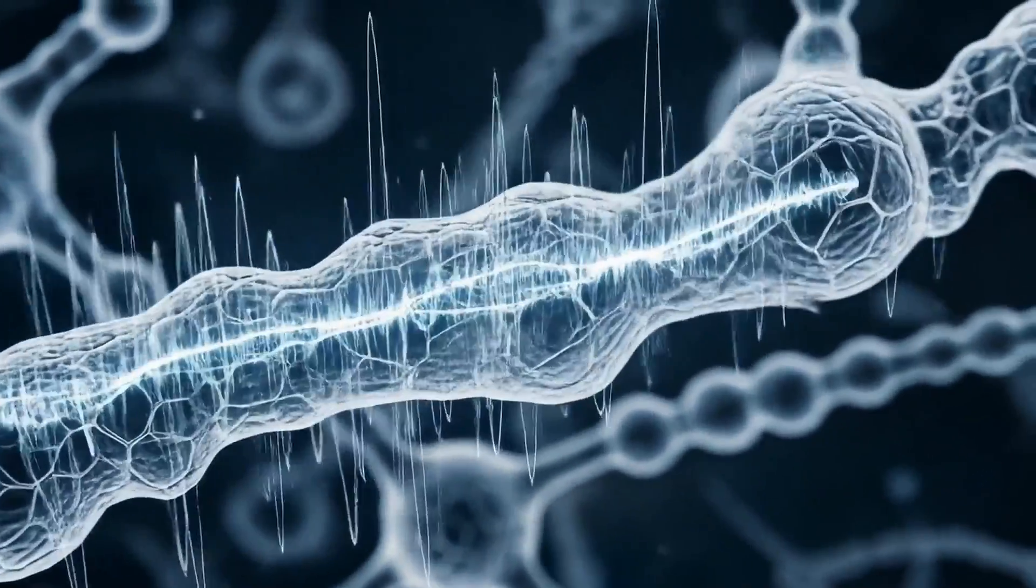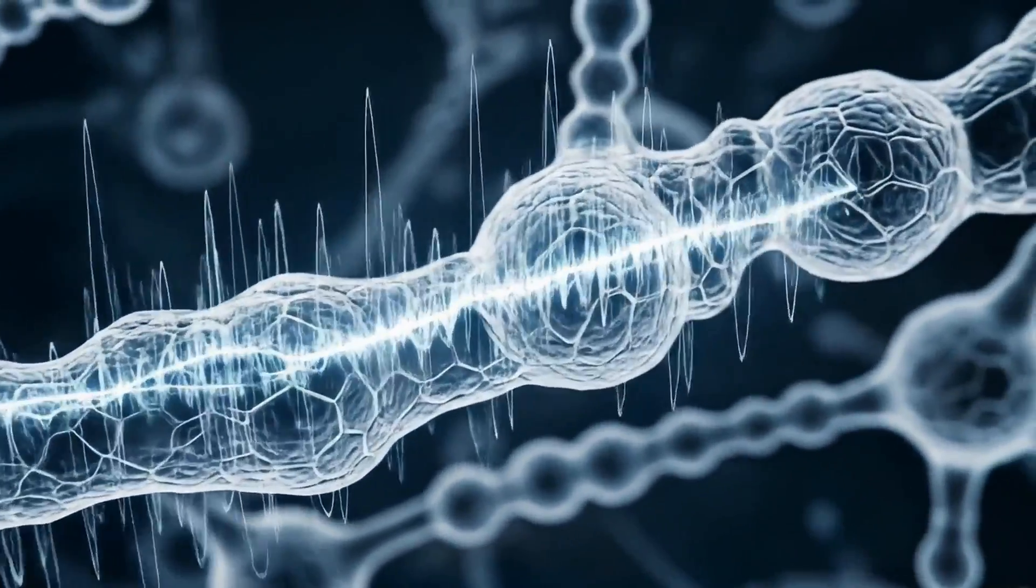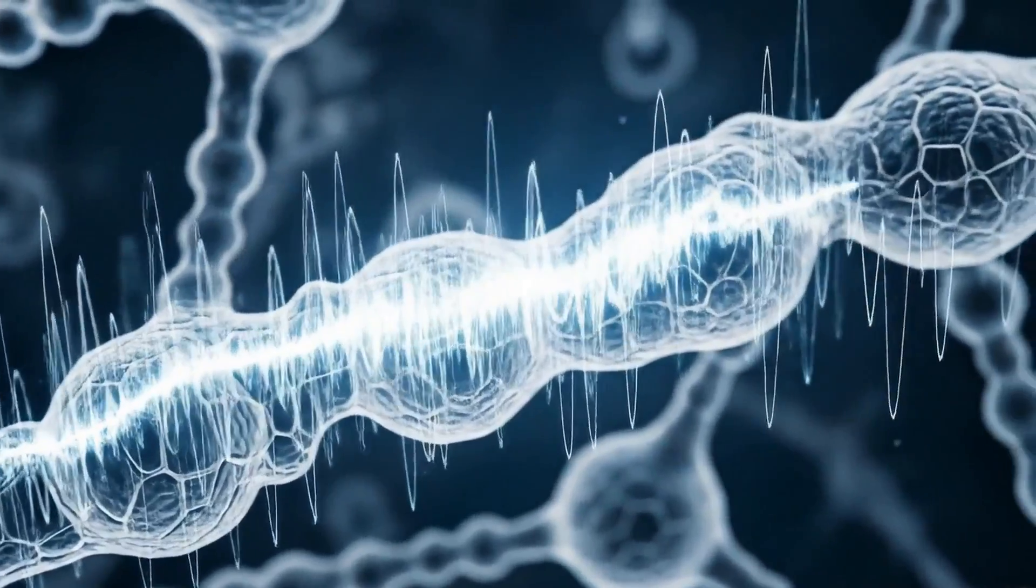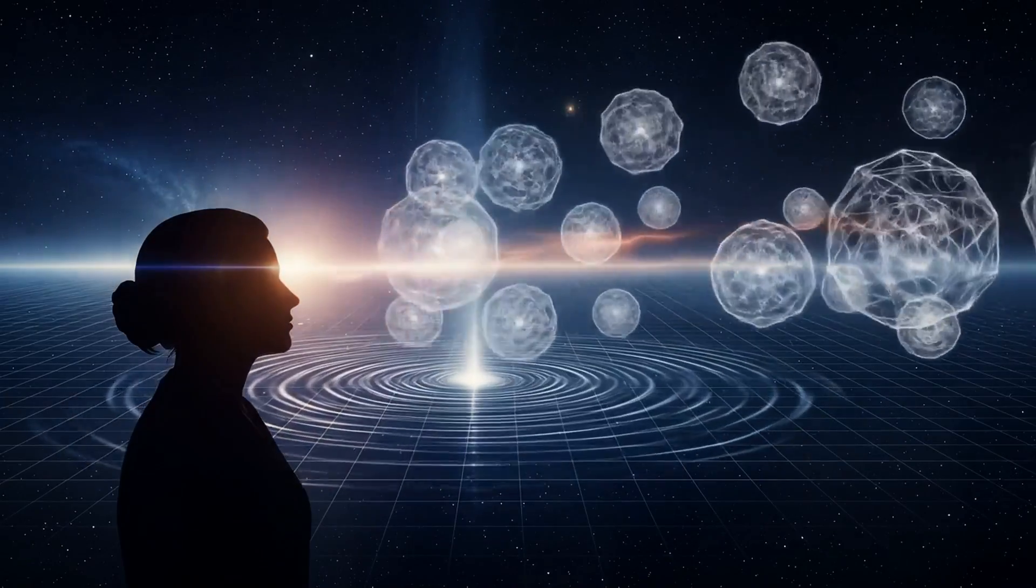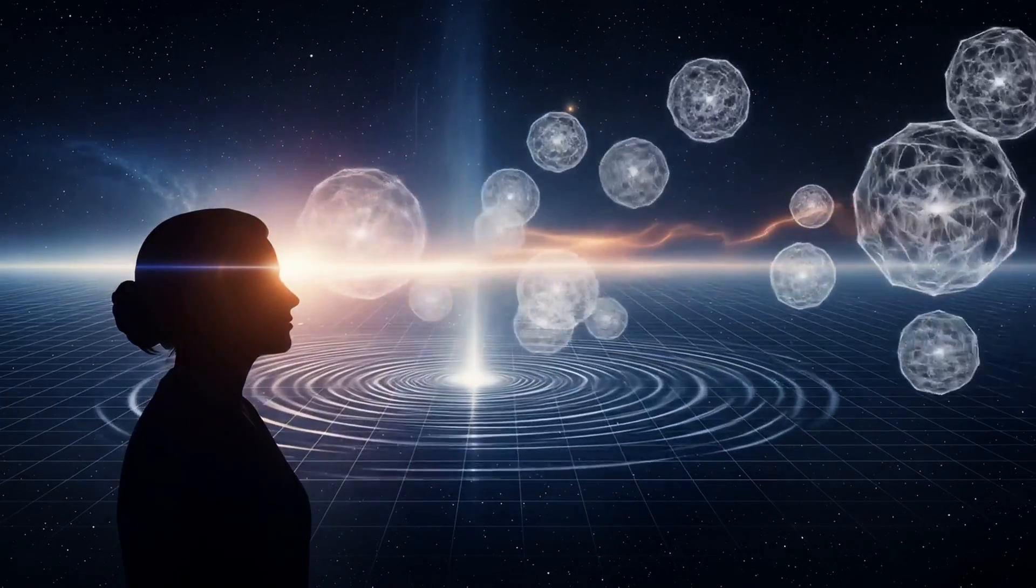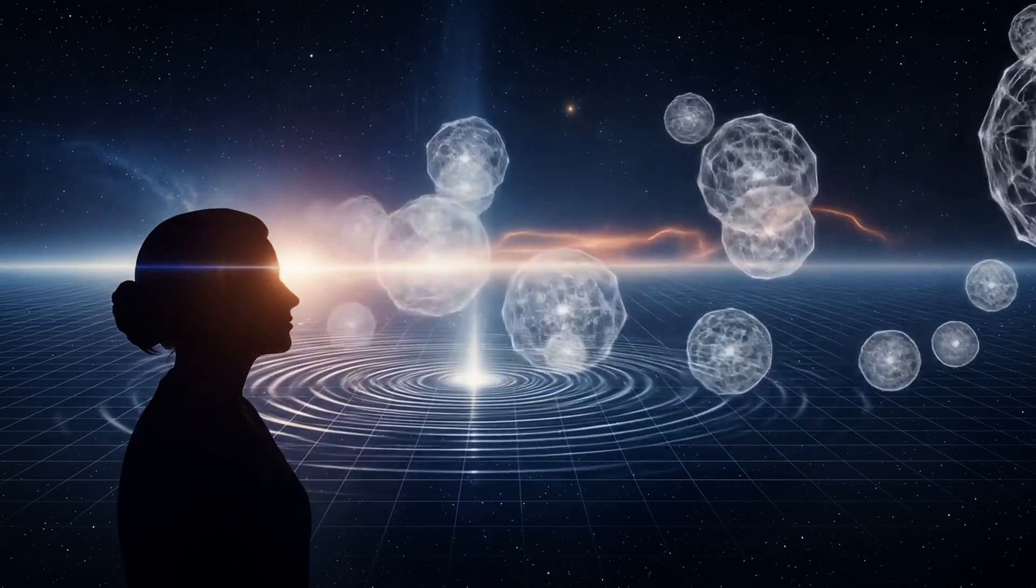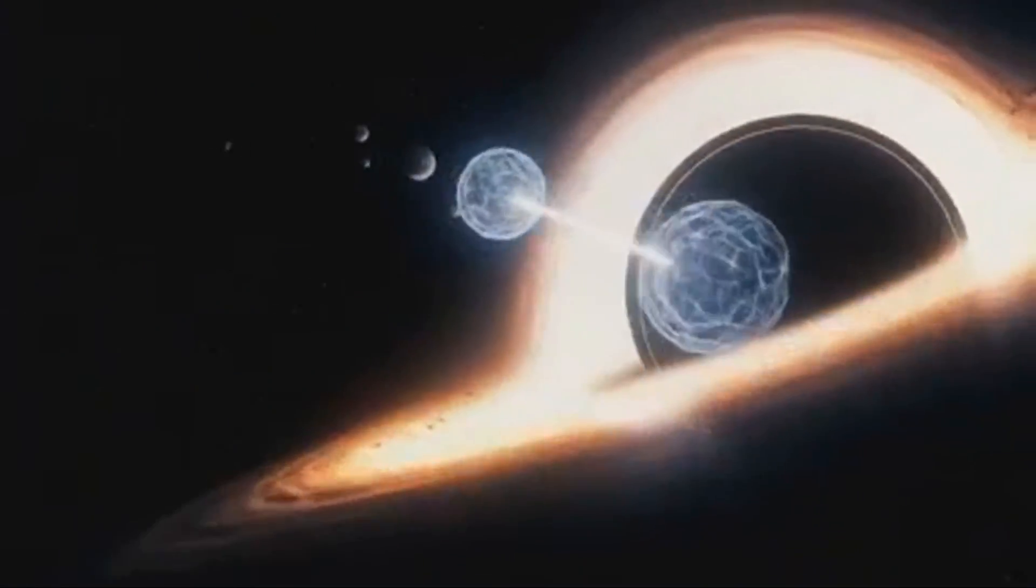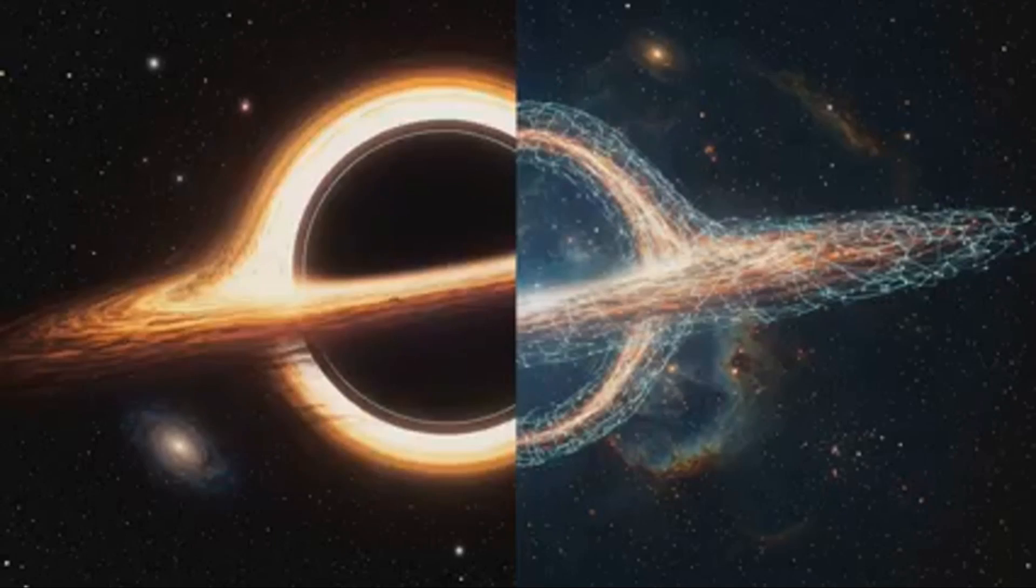Your microtubules read them, collapsing each quantum state vector into a conscious moment. Each collapse is a flicker of awareness, a gravitational encoding of thought. Because mass has angular frequency and its rate of change is acceleration. And acceleration is gravity. So gravity itself is the imprint of thought.